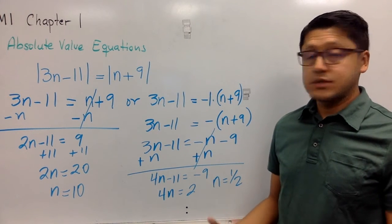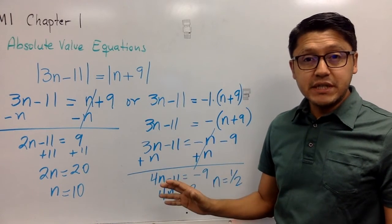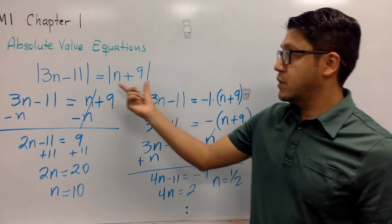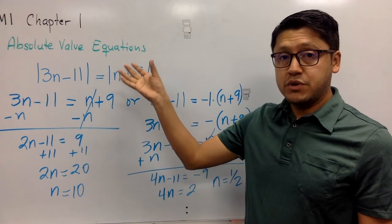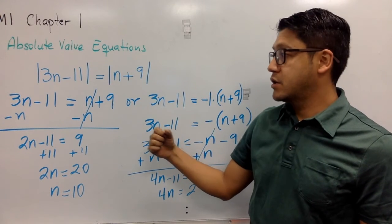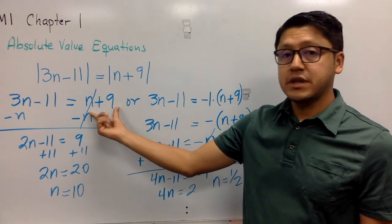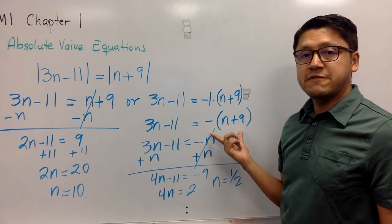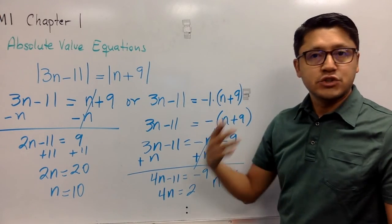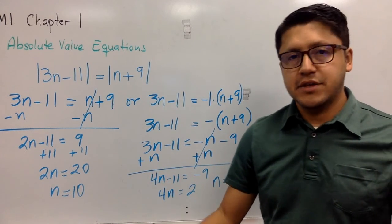So as you can see, it's no big deal. Just make sure that when you're getting rid of the absolute value bars, you keep the positive form of this expression and the negative form of that expression. Solve for the variable, and then you got it, okay?